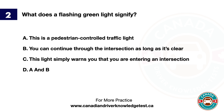Question 2. What does a flashing green light signify? A. This is a pedestrian-controlled traffic light. B. You can continue through the intersection as long as it's clear. C. This light simply warns you that you are entering an intersection. D. A and B. The answer is D, A and B.